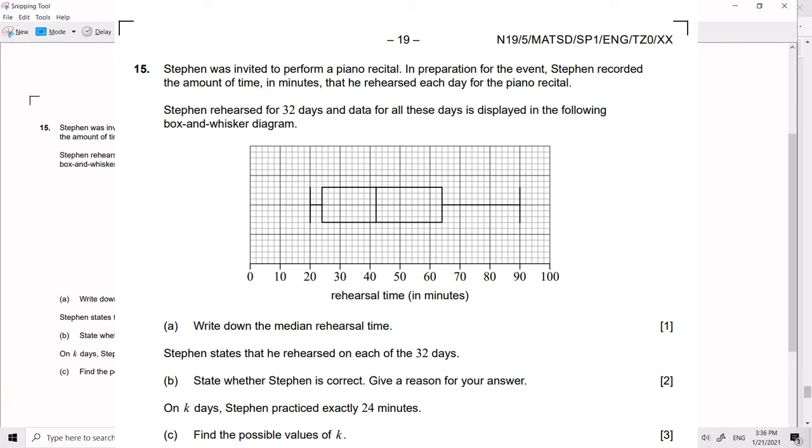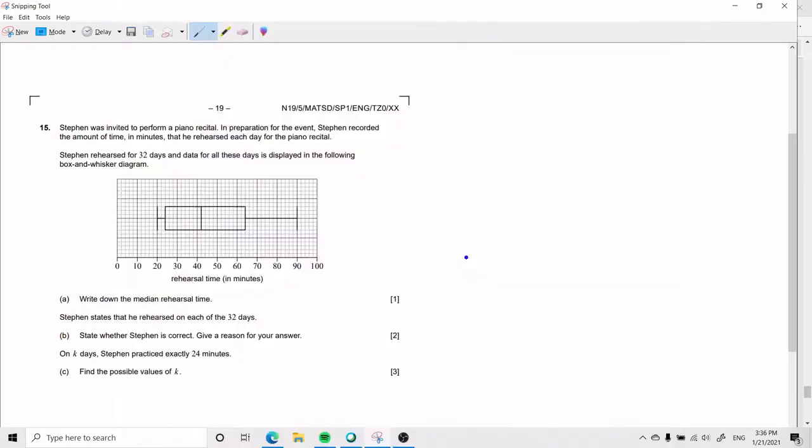Hello everybody, today we will be going over a box and whisker plot problem, and here it goes. So we have that Stephen was invited to perform at a piano recital. In preparation for the event, he recorded the amount of time in minutes that he rehearsed each day for the piano recital. So we know that he rehearsed for 32 days and then he took all the data.